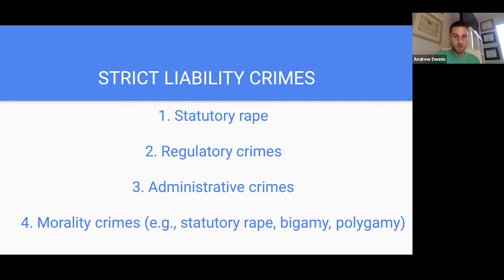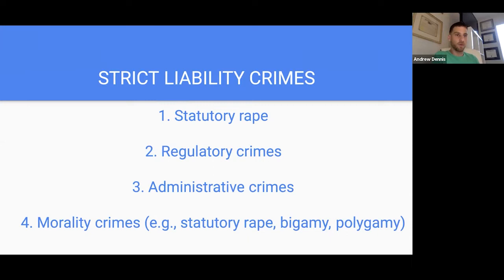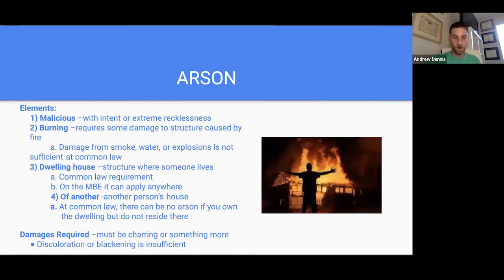Strict liability crimes include statutory rape, regulatory crimes, administrative crimes, and morality crimes such as bigamy and polygamy. Strict liability means there's no intent requirement — you're strictly liable. Statutory rape is the easiest example: there's no defense. She showed me an ID saying she was of age — doesn't matter. You have satisfied the elements to be convicted as long as you did the main act.